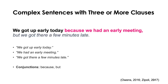The final sentence type is complex sentences with three or more clauses. An example: 'We got up early today because we had an early meeting, but we got there a few minutes late.' We've got three clauses joined by 'because' and 'but.' There's just a lot going on and a lot to process. That's why this sentence type is difficult for all the same reasons the others are difficult.